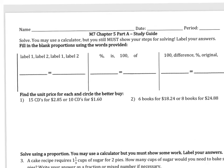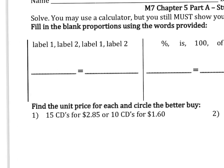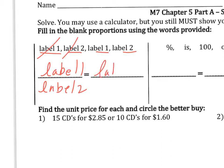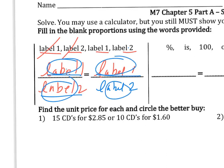This part, you're just putting words to set up proportions. You just kind of have to think about how the words look. You have label one, label two, label one, label two. So basically, you'll put label one here, and then label two here. Label one's over here, so I'll put label one over here. Label two's here, so I'll put label two here. That's all that's saying — it's just trying to show you how to line up the labels. Label one, label one, label two, label two.